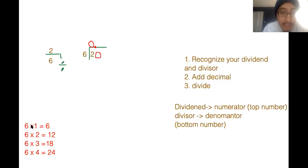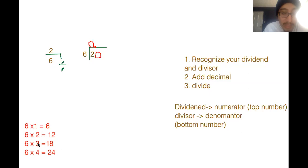Now we're going to do the same thing as a regular division problem: how many times does six go into 20? Let's look at our multiplications. Six times one is six — that could work, but can we get closer? Six times two is 12, six times three equals 18 — that's pretty close. Six times four equals 24 — that's when we went over. We want it to be exactly 20 or below, so our magic number is three. Six times three gives us 18, and that's exactly what we want.